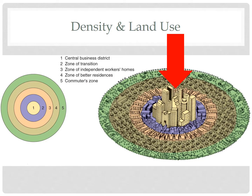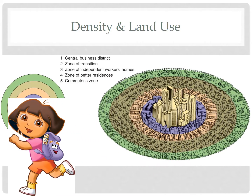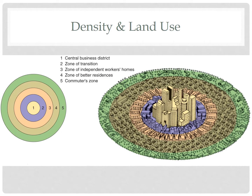The zone of transition is where factories were, but it's also where our poorest residents live. But wait — if the land is expensive, how can the poorest people live there? In the zone of transition, we're going to see multi-story apartment buildings that allow many families to live on a single parcel of land. This spreads out the more expensive cost of the land across many families, thereby lowering the cost per family.